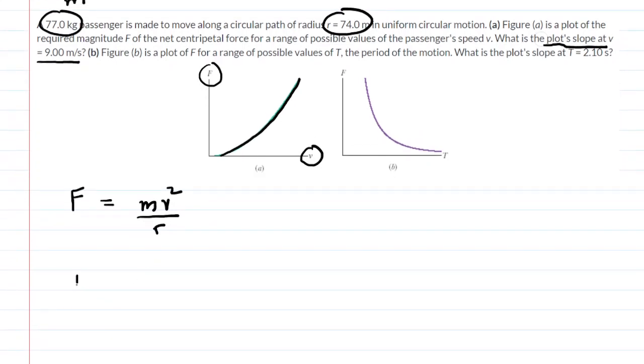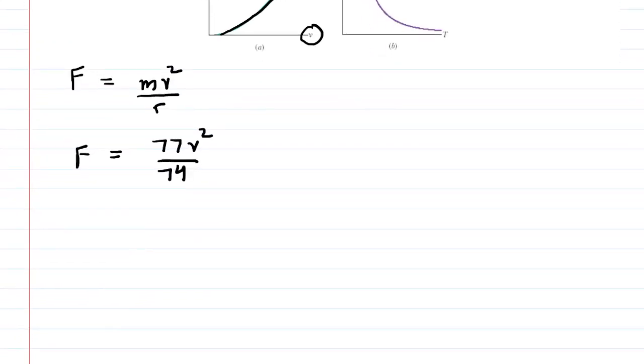What we're going to do is plug in those values right now. We'll plug in 77 kilograms and then we plug in the radius of 74. We will omit units for clarity in this case, but we'll come back to them in a moment. Let's go ahead and divide 77 by 74 to simplify it. We should get approximately 1.0405, and then we have v squared.